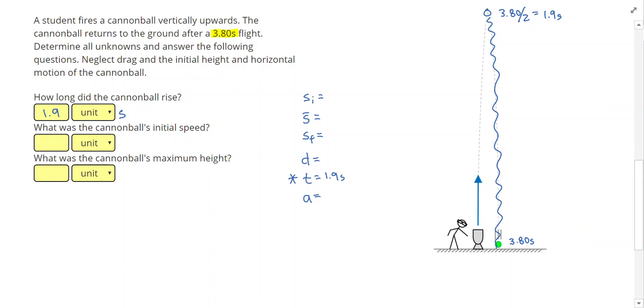I also know that the object is, the cannonball is in free fall. So 10 meters per second squared. Remember, your class might be using 9.81. And my final speed is 0, because I'm saying that my final time is when the ball reaches the maximum height.